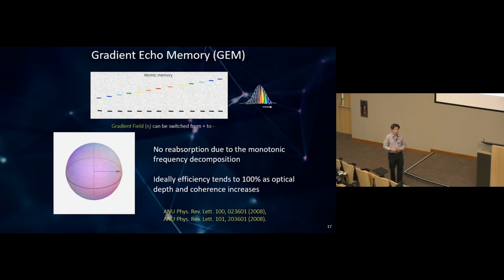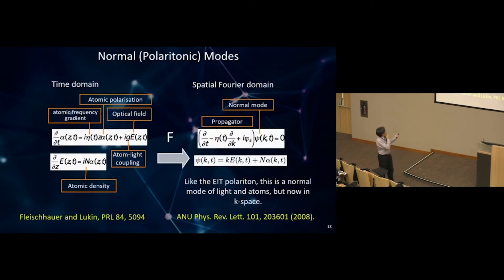Because it's hopping over the resonance, there's no reabsorption due to monotonic frequency decomposition. So on exit, it doesn't experience reabsorption. In theory, it can be 100% efficient simply because of the linear increase or decrease of detuning. But to get 100% efficiency, you need a lot of atoms so every photon is absorbed. You need very high optical density, packing the atoms as densely as possible.